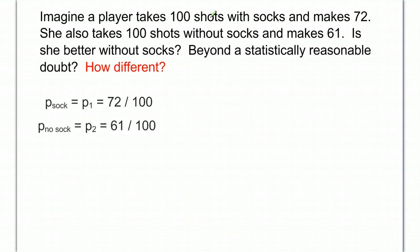We have the situation where a player takes 100 shots with socks and makes 72. She also takes 100 shots without socks and makes 61. We want to know if she's better with socks beyond statistically reasonable doubt, and we did that with our p-value on our 2-prop-z test. But now we want to know how different are they?